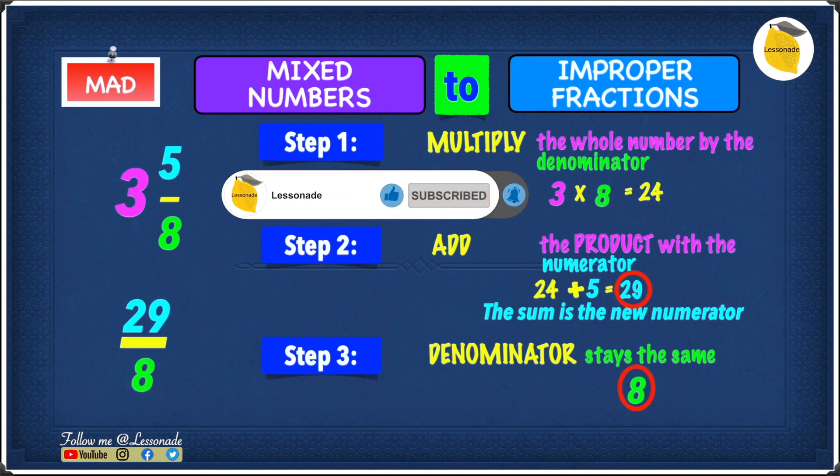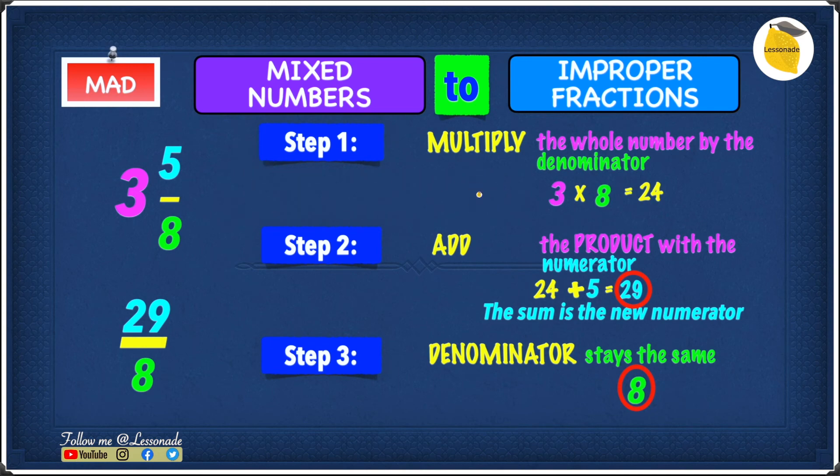We know that 29 is the numerator, and 8 is the denominator. So therefore, the fraction is 29 over 8. So 3 and 5 over 8, converted into an improper fraction, gives you 29 over 8.